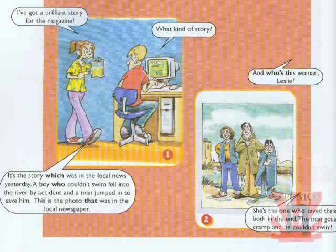I've got a brilliant story for the magazine. What kind of story? It's a story which was in the local news yesterday. A boy who couldn't swim fell into the river by accident and a man jumped in to save him. This is the photo that was in the local newspaper. And who's this woman, Leslie? She's the one who saved them both. In the end the man got a cramp and he couldn't swim.